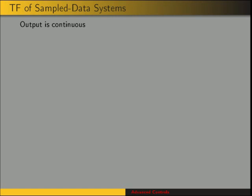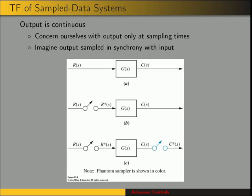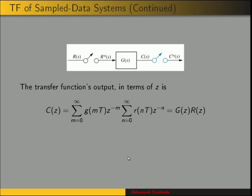Typically for our plant, the output will be a continuous signal, but we only are concerned with the output of our plant at specific sampling times. So what we want to do is imagine a sampled output that is synchronous with the input. Here we have a continuous system with a sampled input, and we want to imagine this sampled output. The transfer function for this system is just G(Z) in the Z domain times the input in the Z domain — the product of those two.